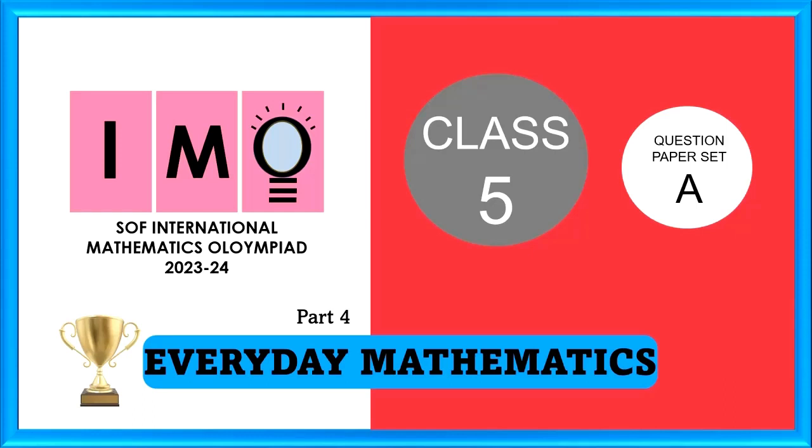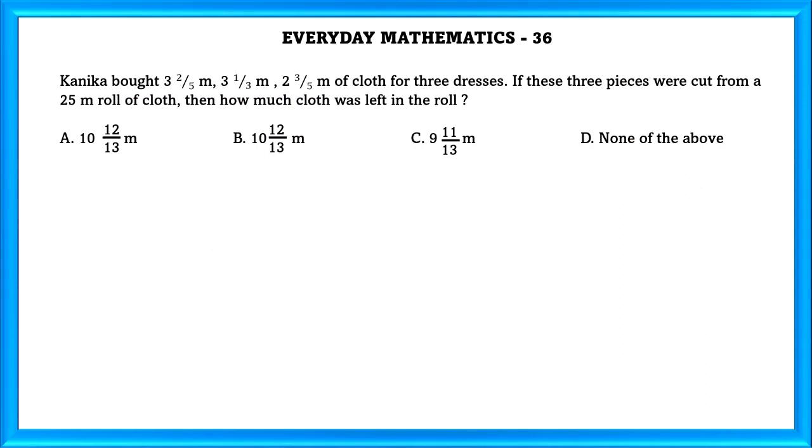Class 5 SOF IMO Part 4 Everyday Mathematics. Question Number 36: Kanika bought 3 2/5 meter,